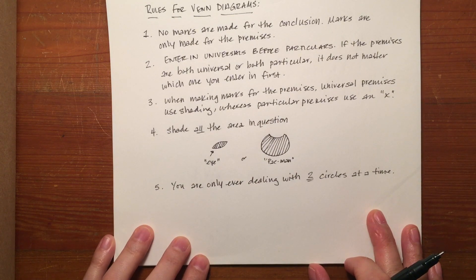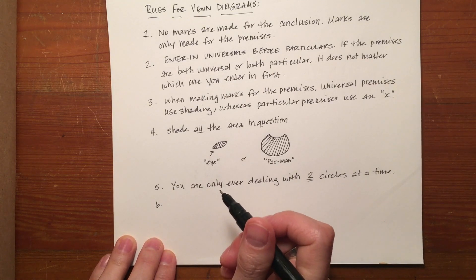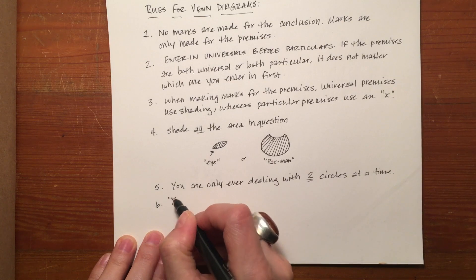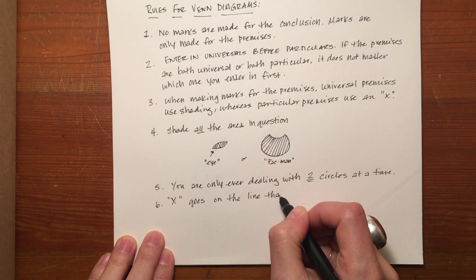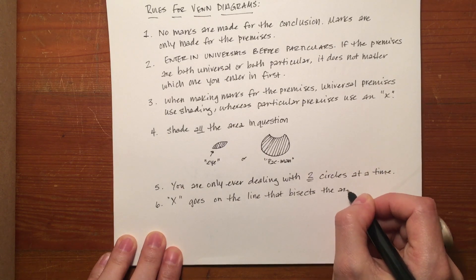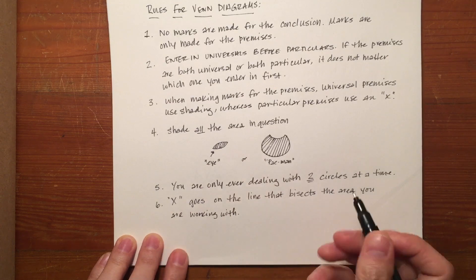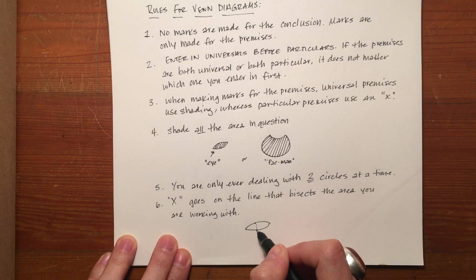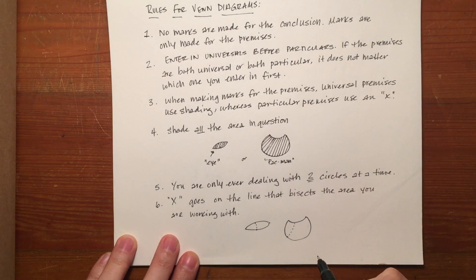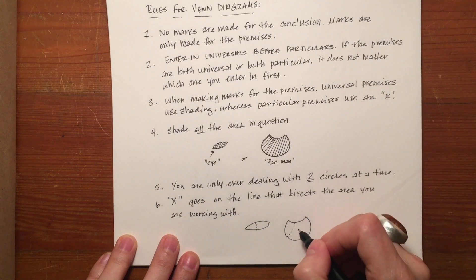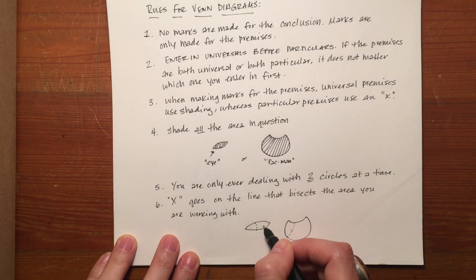And then the last one is, because each one of them are divided into two parts, if you are entering an X, that X goes on the line that bisects the area you are working with. So for example, if you were looking at just this, or just this, as in the previous example, where this is a larger part of a circle and this is the line of the third circle that we're ignoring, you would put the X here or here on the line if it is empty. If it is not empty, if part of it is shaded, then you would put the X in the open spot.